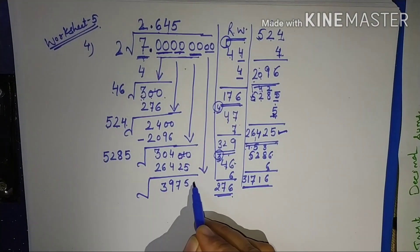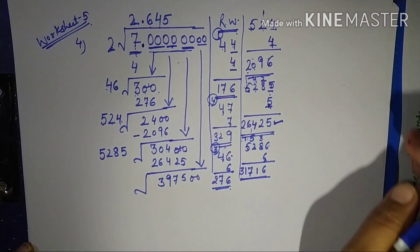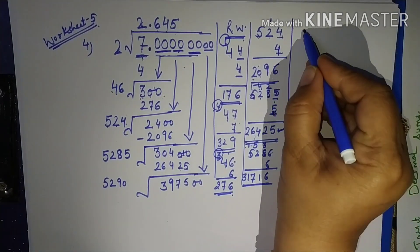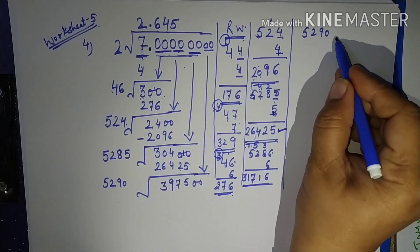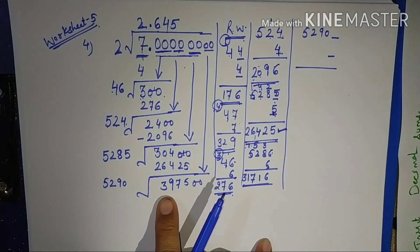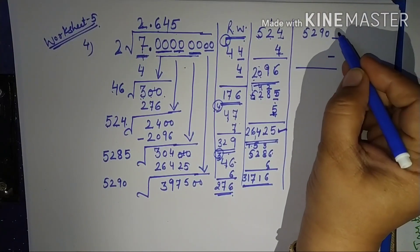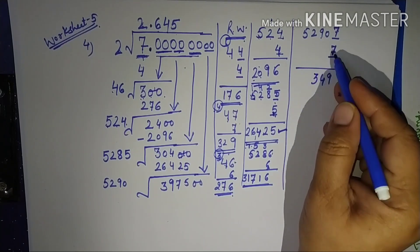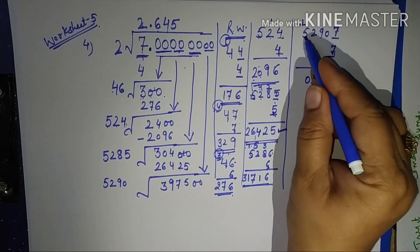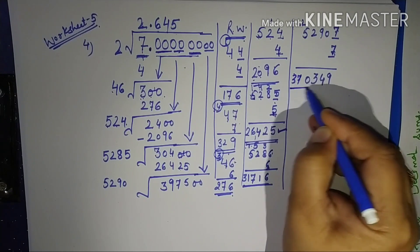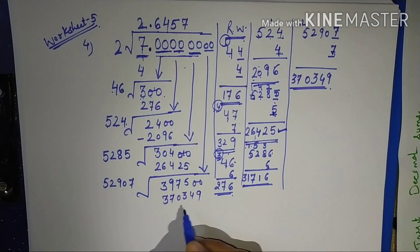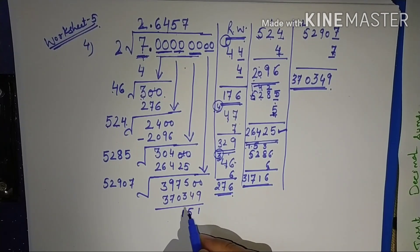So I take one more pair of zeros. The divisor becomes 5285 plus 5 = 5290. Now I need to place a digit with 5290 to get a product equal to or less than 397500. Let me try 7: 52907×7 = 370349 — yes, it works. So place 7 here. Our quotient now has 4 decimal places: 2.6457.